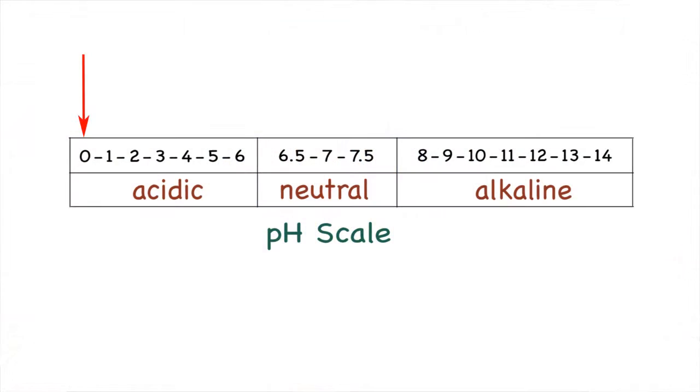In order to help us understand some of the terms and descriptions of mountboard, we need to have a basic understanding of the pH scale. The pH scale is an indication of acidity or alkalinity of materials and substances, and is measured between 0, which is acidic, and 14, which is alkaline. We give pH neutral a range of between 6.5 and 7.5 on the scale.